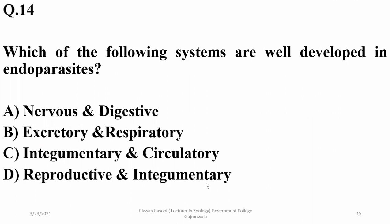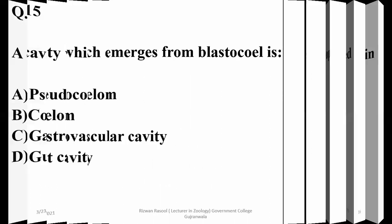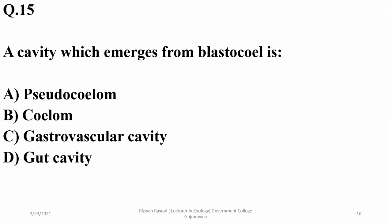Question twelve: which systems are well developed in endoparasites? Endoparasites have reproductive and integumentary systems which are well developed as compared to other systems.